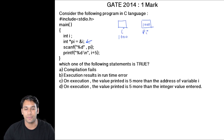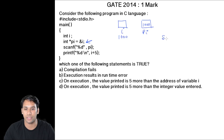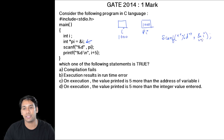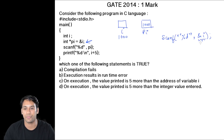Now in the scanf statement, instead of giving address of i they have given pi. The classical scanf statement is: scanf("%d", &i) or whatever variable we are taking the value for. In the scanf statement we take the address of the variable for which we have to take the value from the user.